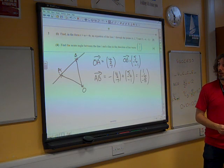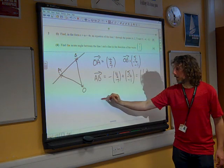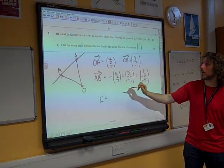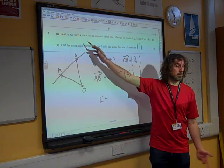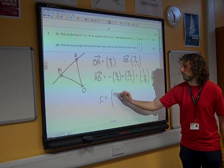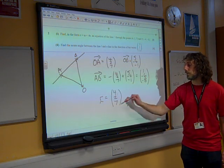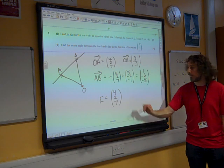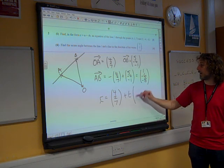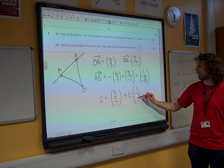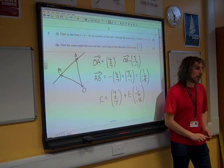And then the equation is just R is, A is a vector on the line. So, let's take A, as we call it, because that seems the simplest thing to do, plus the parameter times the direction of the line. And there we go.